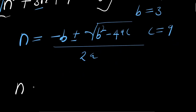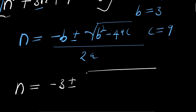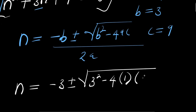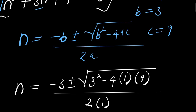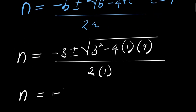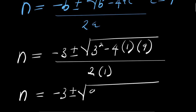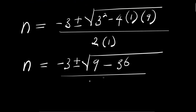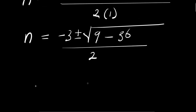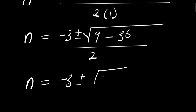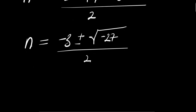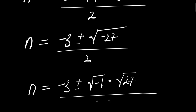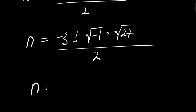So from here we have n equals negative 3 plus or minus square root of (3 squared minus 4 times 1 times 9) divided by (2 times 1). That gives n equals negative 3 plus or minus square root of (9 minus 36) divided by 2, which is n equals negative 3 plus or minus square root of negative 27 divided by 2. We can write square root of negative 27 as square root of negative 1 times square root of 27, which is i times 3√3.